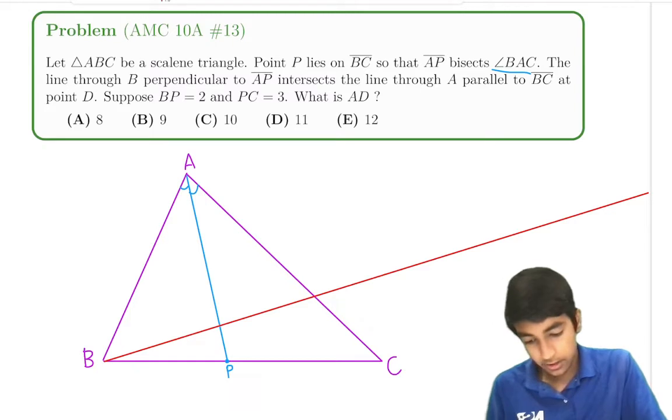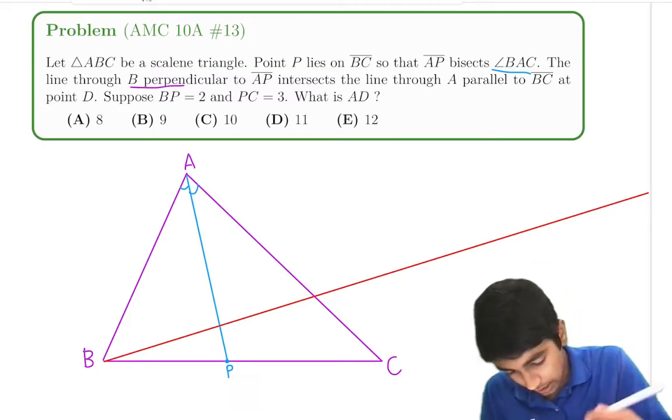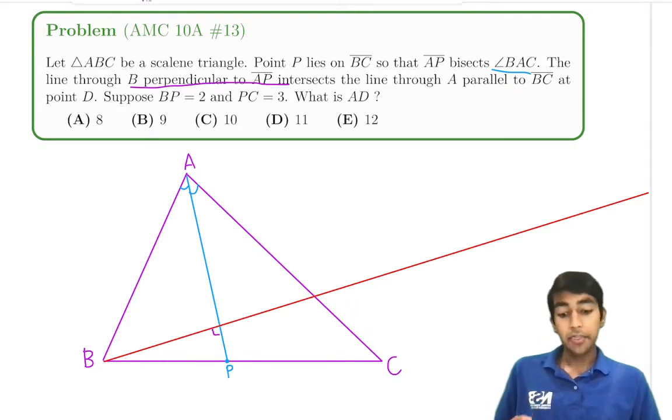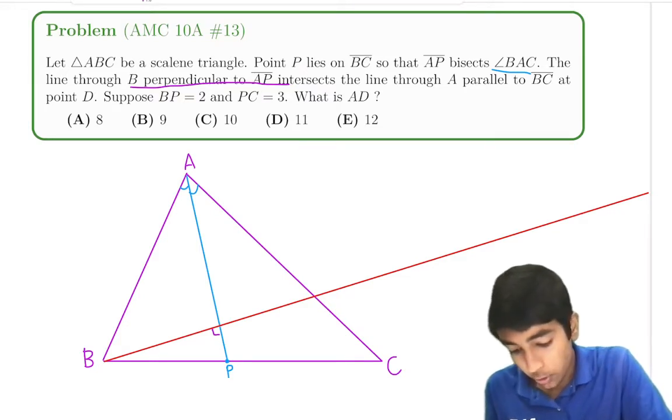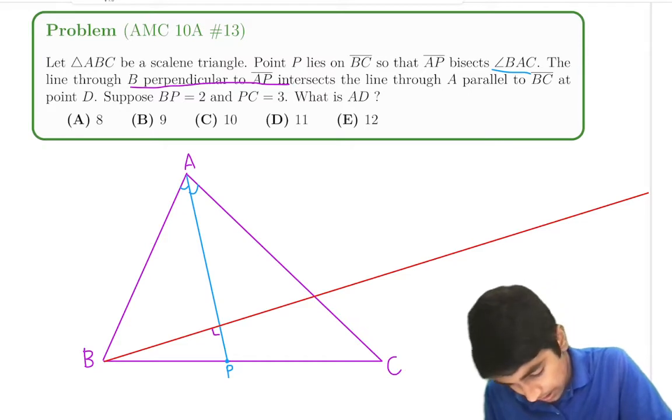And basically we're given such that the line through B perpendicular to AP, so perpendicular to AP right there, intersects the line through A parallel to BC. And the line through A parallel to BC is the line over here, this one.